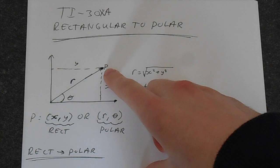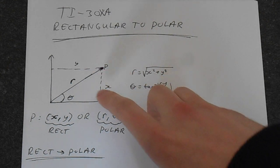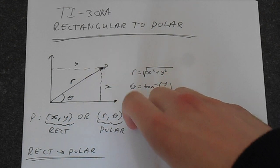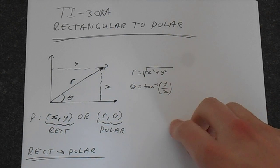So you can specify a point P either in terms of coordinates x and y, or as r and theta. And you can convert between them: r equals x squared plus y squared,